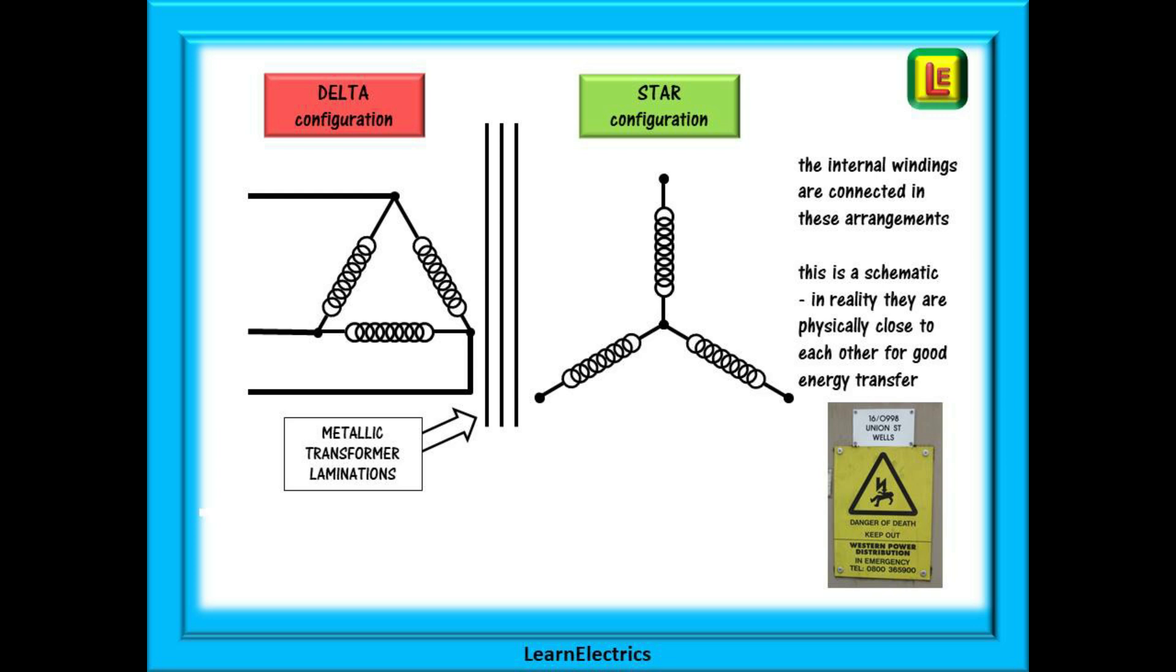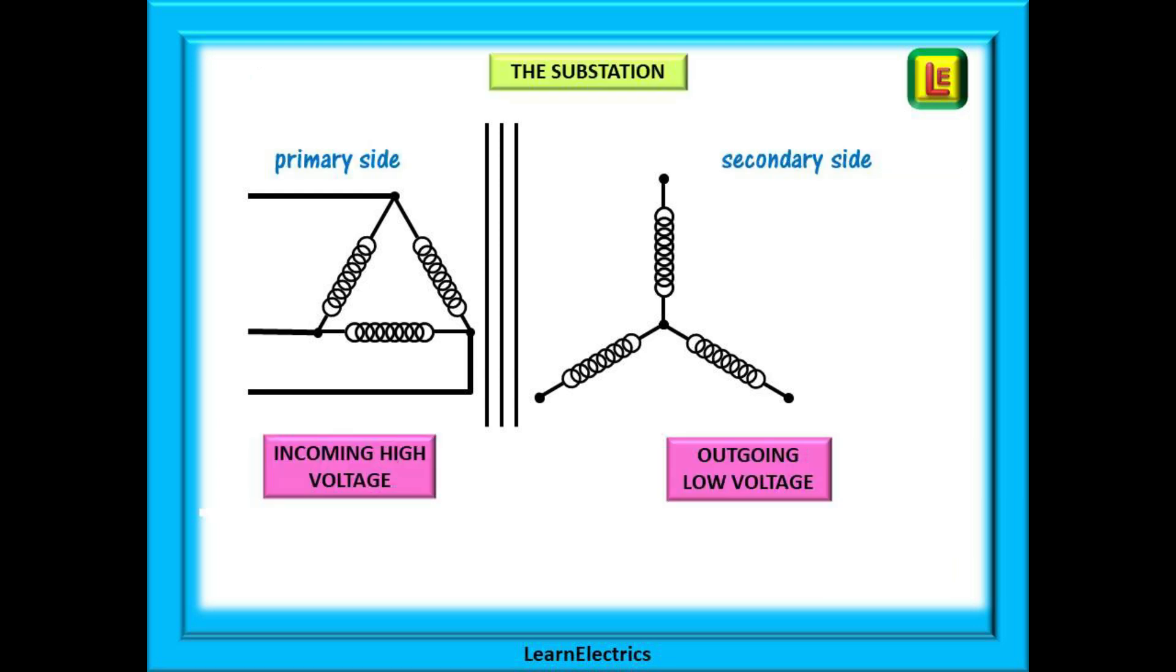At the substation one set of the transformer windings are connected together in what is called a delta configuration and the other set into a star configuration as shown here. There will also be lots of metal work in the transformer called laminations and these aid the electromagnetic transfer of energy between the transformer windings. This drawing is a schematic to make it easier to understand but in reality the windings will be very close together for good energy transfer. The delta side shown on the left here is the input side. It looks like a greek delta shape and this is where the overhead pylons will terminate. This is called the primary side of the transformer.